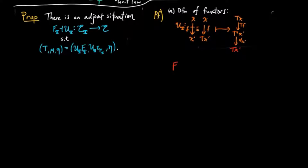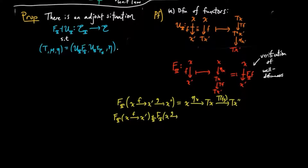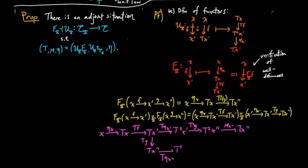The free functor is defined on objects by taking X to X, and on morphisms by taking F to the E composition eta_X followed by TF, which is a morphism in the Kleisli category from X to X'. We verify the free functor is well-defined by looking at its action on the composition F followed by G, which gives eta_X followed by TFG. Applying the free functor to F and G separately and taking the composition in the Kleisli category, we can substitute TG followed by T eta_{X''} for T eta_{X'} followed by T²G by the naturality of eta_{X'}.